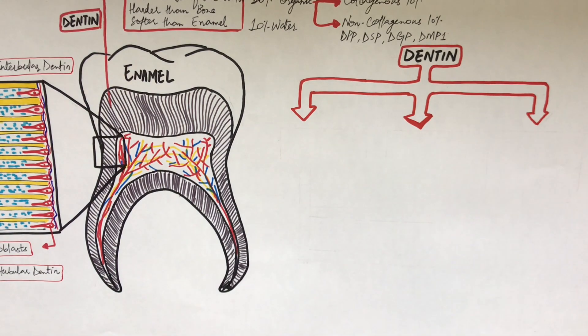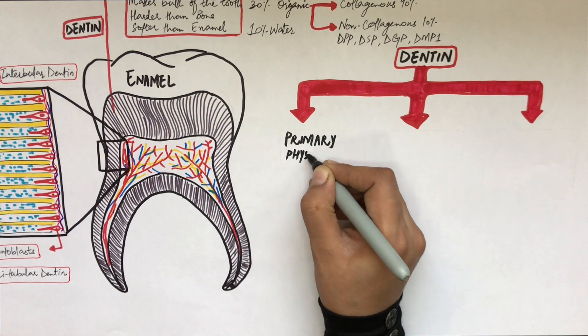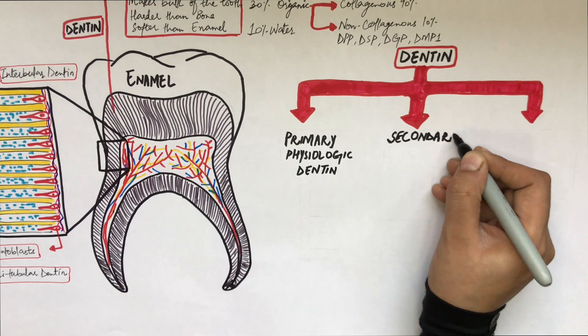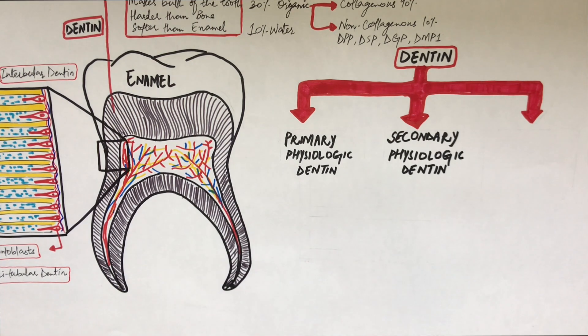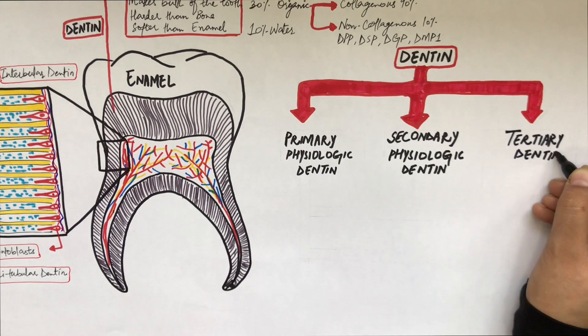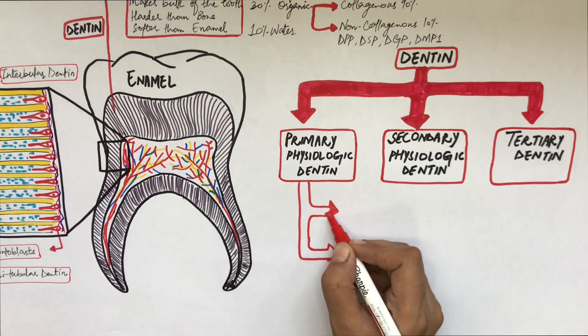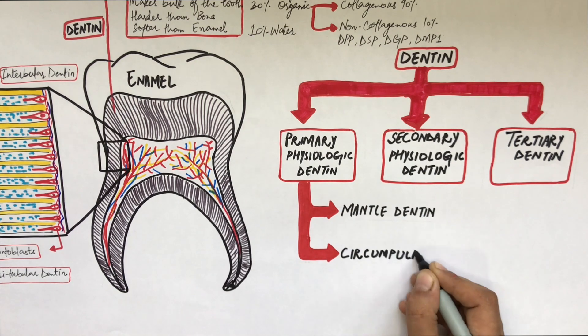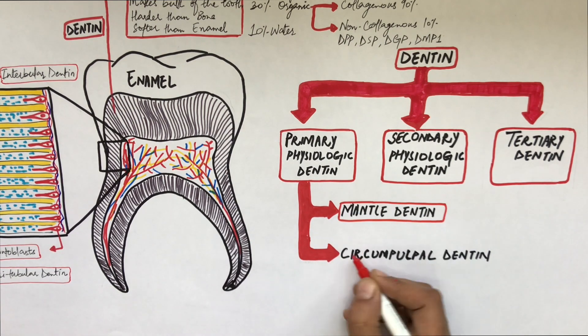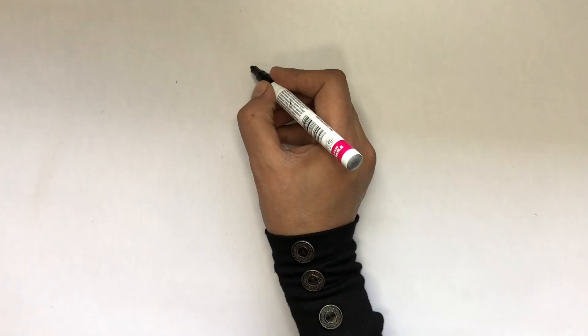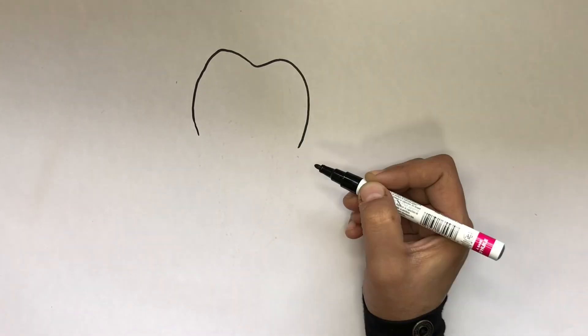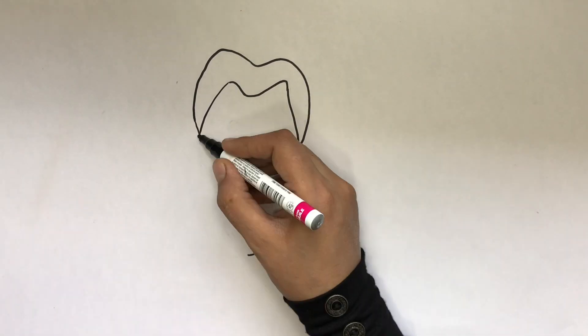Dentine is divided into three main types: primary physiologic dentine, secondary physiologic dentine, and tertiary dentine, also called reparative or reactionary dentine. The primary physiologic dentine is further divided into mantle dentine and circumpulpal dentine. Let's draw a diagram to understand the location and characteristics of each one.